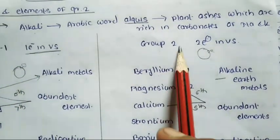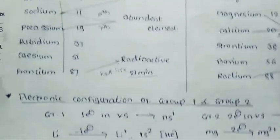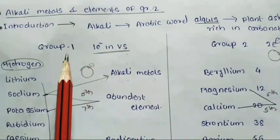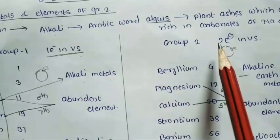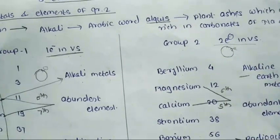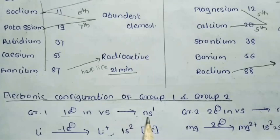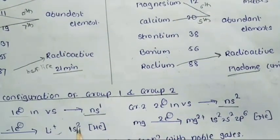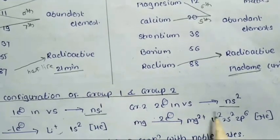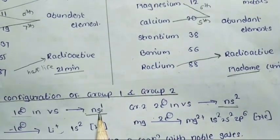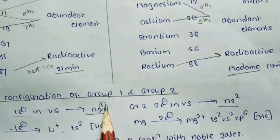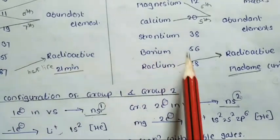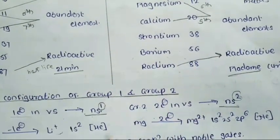In group 1, one electron is present in the valence shell, and in group 2, two electrons are present. The general electronic configuration of group 1 is NS1 and of group 2 is NS2. In both groups, this loosely held s-electron in the valence shell can be easily removed.